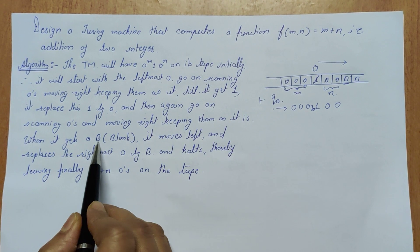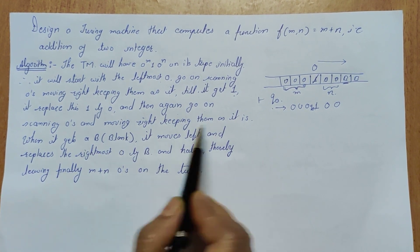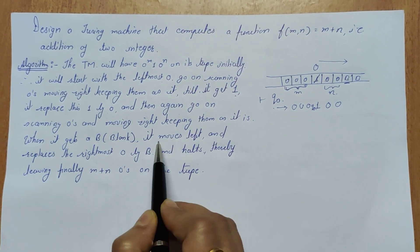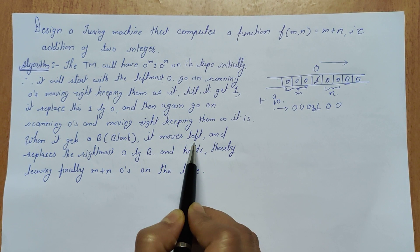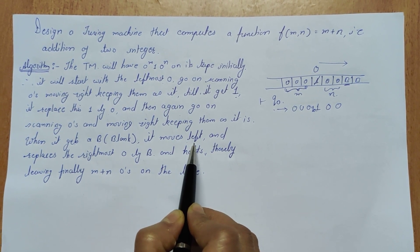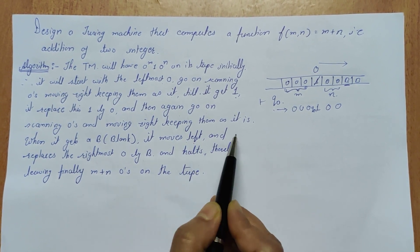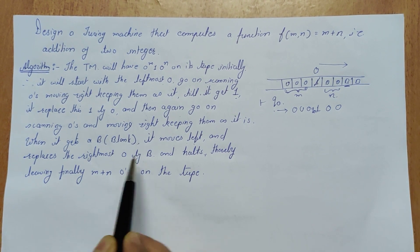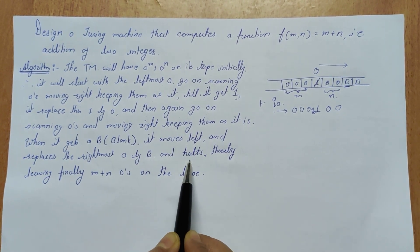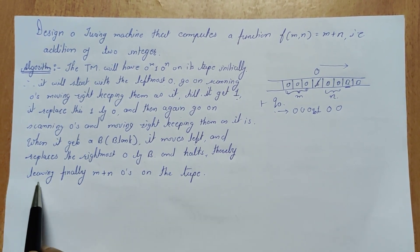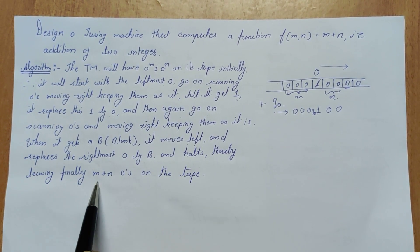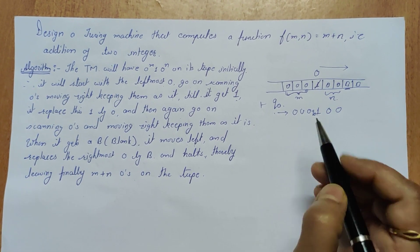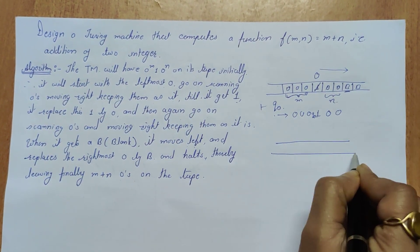It continues moving right until it gets a blank. On getting a blank, it moves one position left and replaces the leftmost zero with a blank, then halts, leaving finally m+n zeros on the tape.